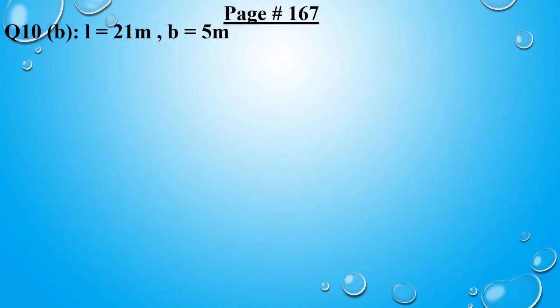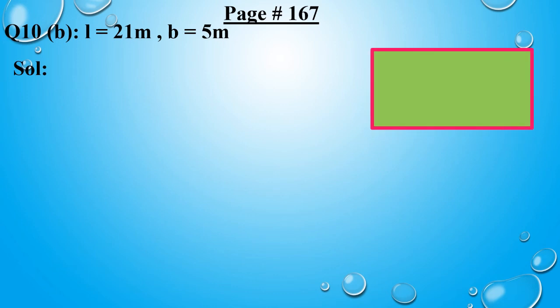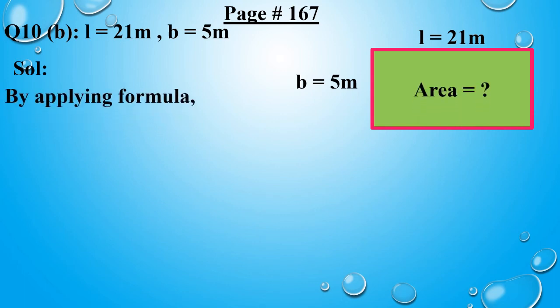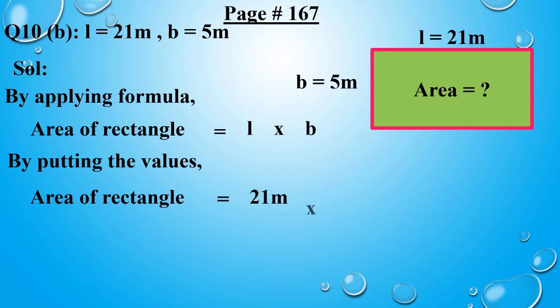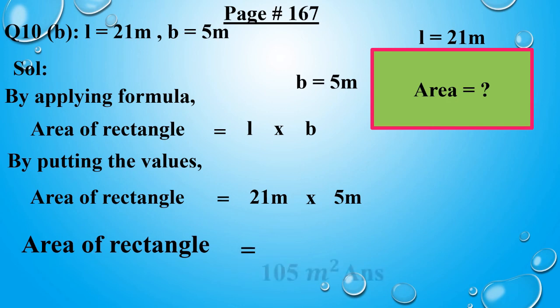As you know that we have done question number 10 part A in our previous video. Now I am going to solve part B here. L is given 21 meters, B is given 5 meters. First of all I am going to draw a rectangle: L is equal to 21 meters, B is equal to 5 meters. We will find the area, so first of all we will apply the formula, which is: area of rectangle equals to L into B. Putting the values: area of rectangle equals to 21 meters into 5 meters, which gives area of rectangle equals to 105 meter square.